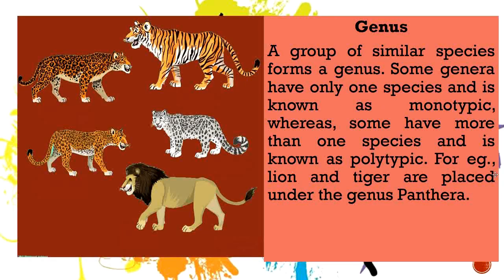Next we have genus. A group of similar species forms a genus. Some genera have only one species, known as monotypic, whereas some have more than one species, known as polytypic. For example, a lion and a tiger are both placed under the genus Panthera. So they're different but they are placed under the same genus, the same family, and the same kingdom and phylum.